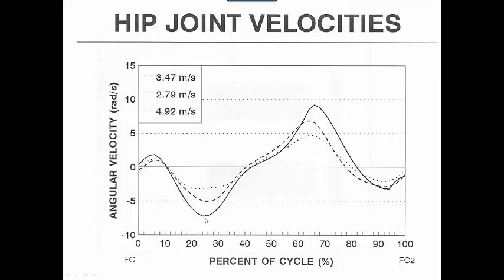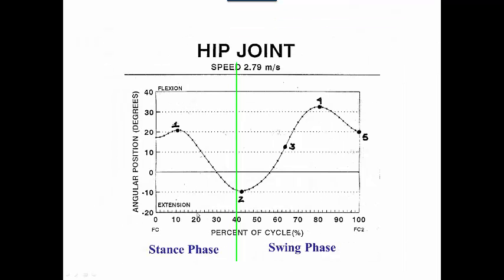Since we're here, we have peak negative velocities around 25%, so that would be peak extensor velocity, and we would have peak flexor velocities somewhere around 70%. So let's look at that. So around 20%, that's mid-motion of the flexion motion.